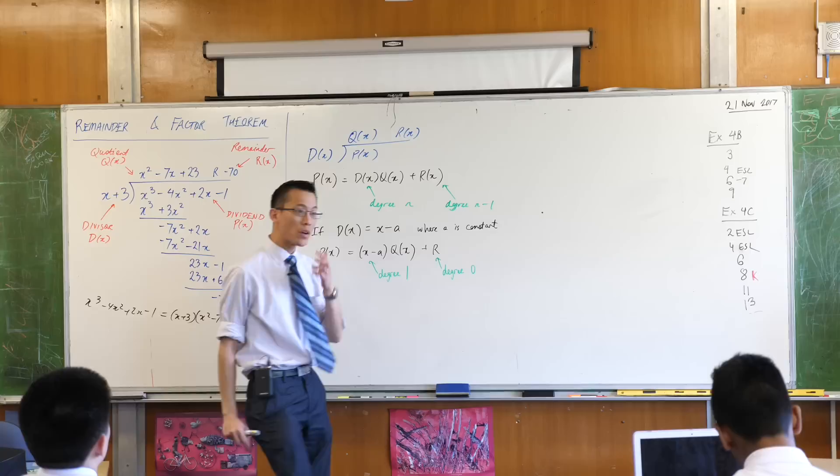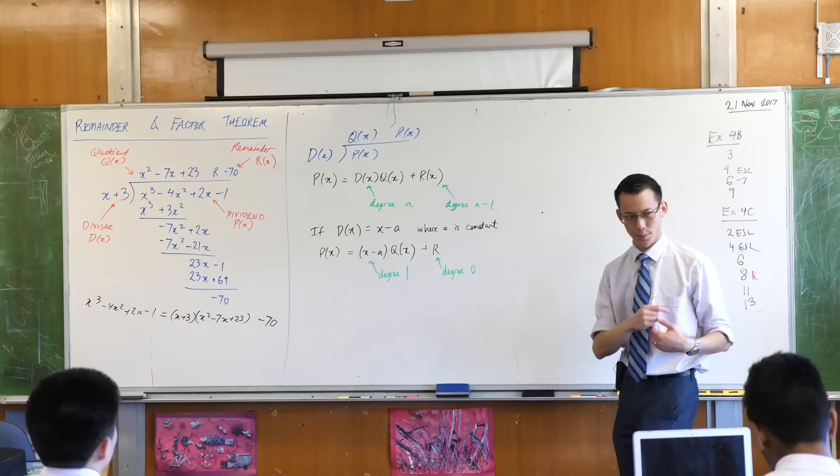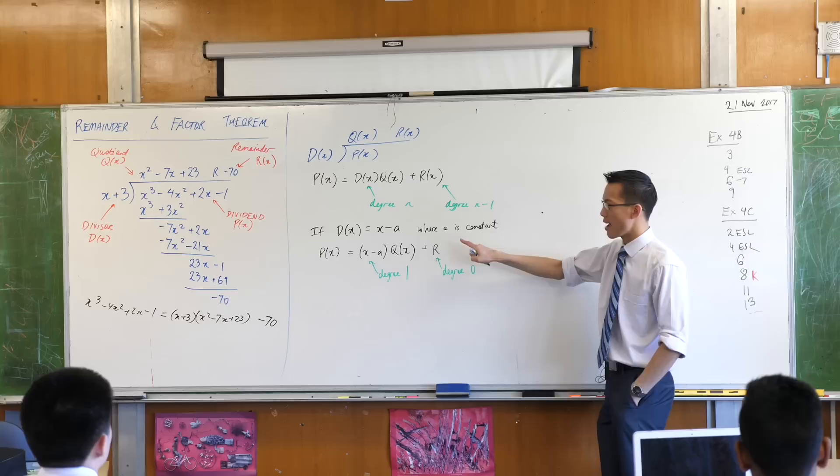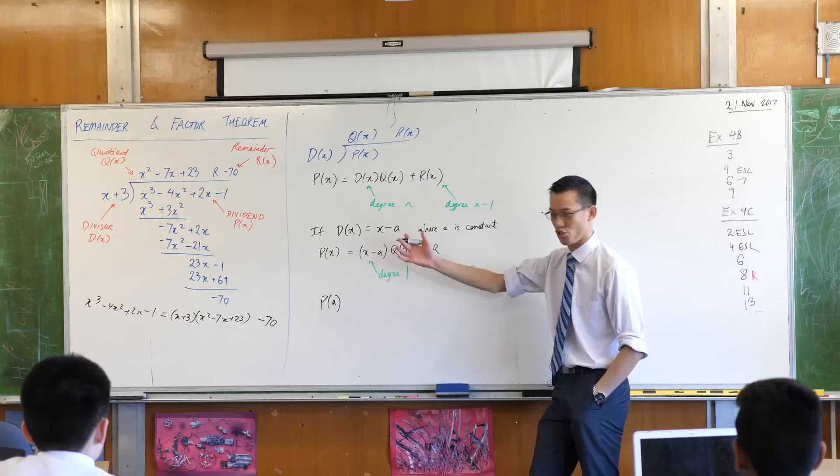Now watch what happens. I can really quickly find out what the remainder of something is, rather than by going through this whole long process, you can see the remainder is the last thing you find out. If I want to, if it's useful to me, spoilers, it will be, if it's useful to me, I can find out the remainder immediately without going through this whole process by making x equal to a. Watch.